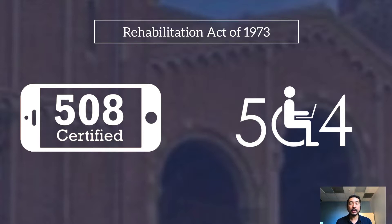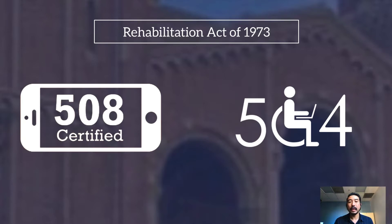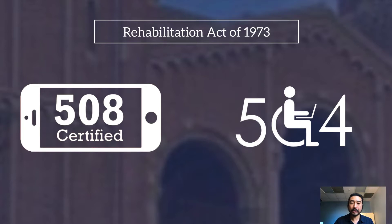This standard has become the gold standard, and there are different levels of compliance. Our goal is currently AA level compliance within Section 508. Section 504 is another law that applies to students — it extends the same rights to students with disabilities as to students without. It says that every student with a disability is entitled to equal access to education as every other student, and that law applies to UCLA as well.